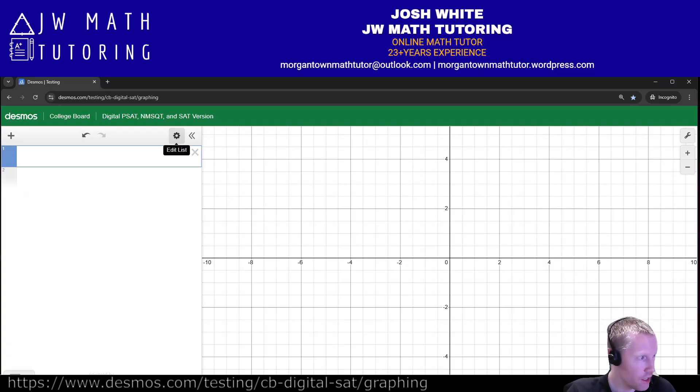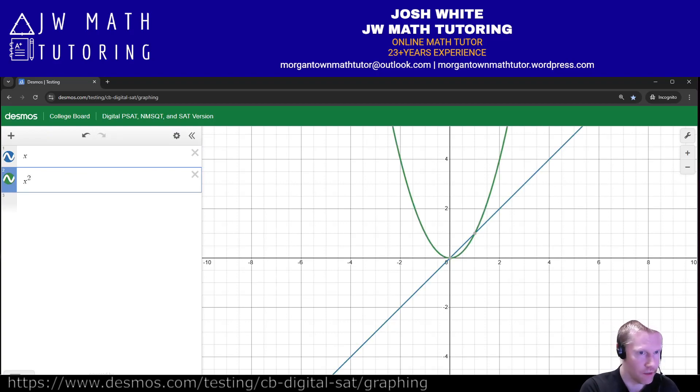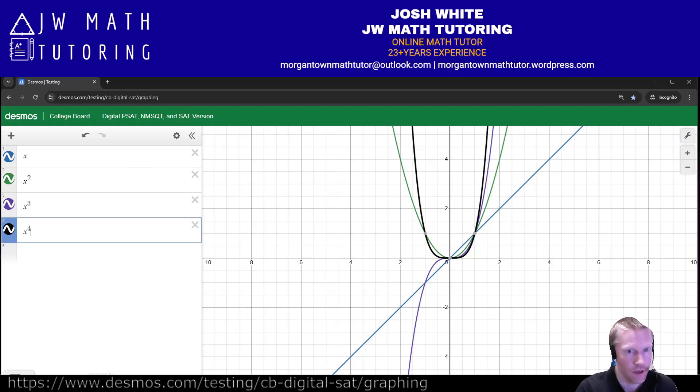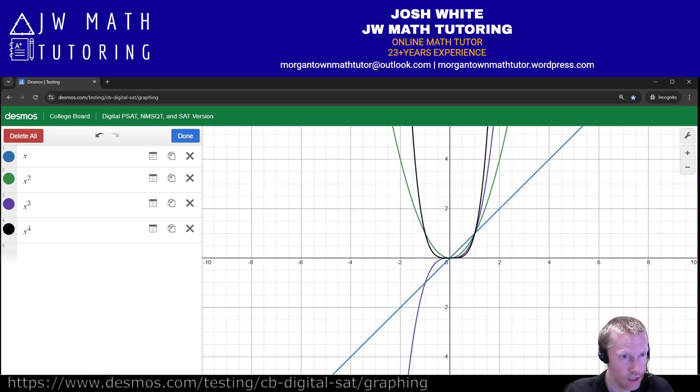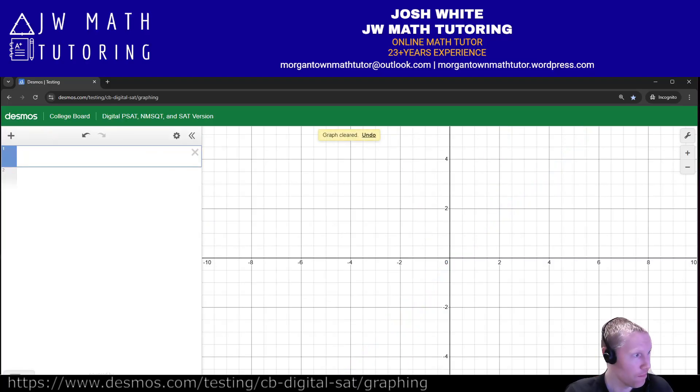With the gear function, there are a couple different things you can do. First of all, if you have a bunch of different things listed here, you can just delete everything. So for example, let's type four different graphs here. Okay, rather than having to click x and get rid of all of them, you can just click this and click delete all, and they will all disappear.